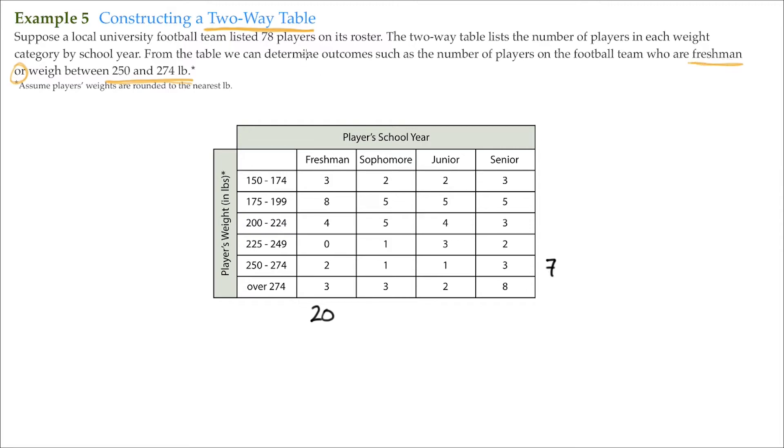So we want to know how many on the roster are freshmen or weigh between 250 and 274 pounds. Well, we wouldn't simply just add up the freshmen, there's 20 here, and then add them to the 250 to 274 pounders, that's 7 here. Remember, because as you notice, if this is the freshmen and this is the 250 to 274 pound players, there's an intersection right here at this group. That means some of the freshmen are 250 to 274 pounds, and some of the 250 and 274 pound players are freshmen. So we would wind up counting this group right here twice. We'd count them once as freshmen and count them again as 250 to 274 pounds. So we'd have to make sure that we'd notice that and take care of that.